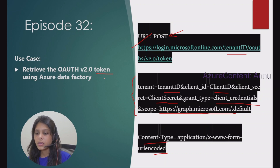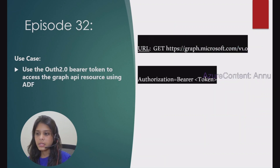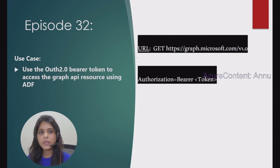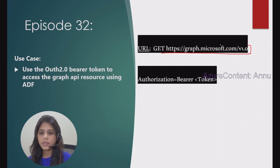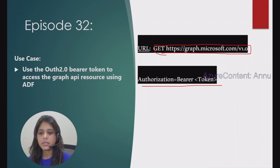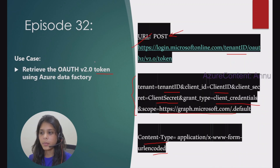The next step will be to use that token to get data from the Graph API. This will be the URL we use, and this is the format in which we need to pass the bearer token generated from our first step.